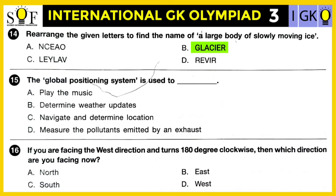Question number fifteen: The Global Positioning System (GPS) is used to — play music, determine weather updates, navigate and determine location, or measure the pollutants emitted by an exhaust? The correct answer is navigate and determine the location. GPS helps people find their location and directions using satellites.